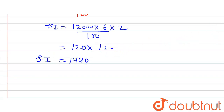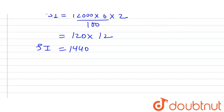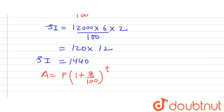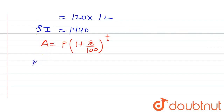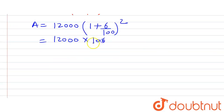Now we will find out the compound interest. First we find the amount using the formula: A = P × (1 + R/100)^T. Here T = 2 years, R = 6%, and P = 12,000. Putting in the values: A = 12,000 × (106/100) × (106/100).